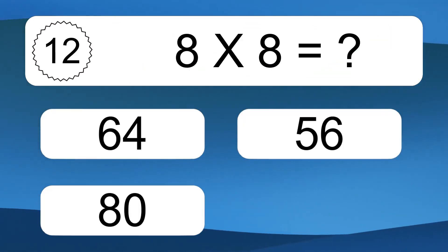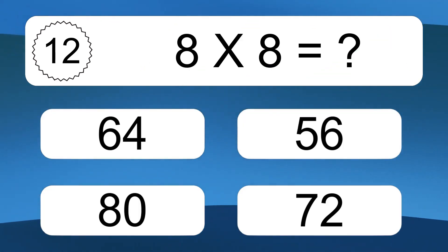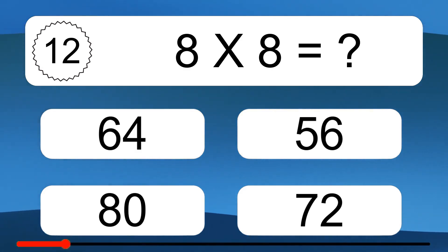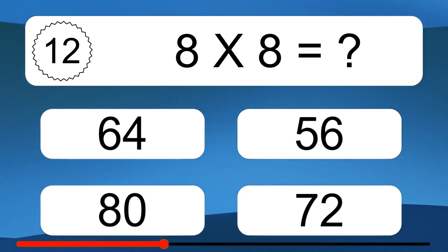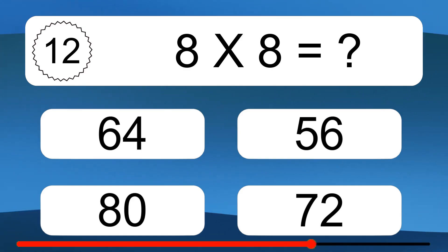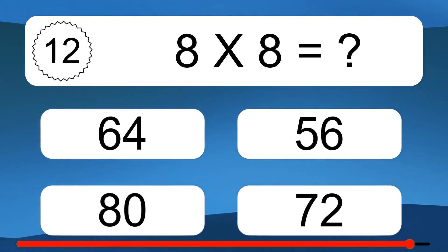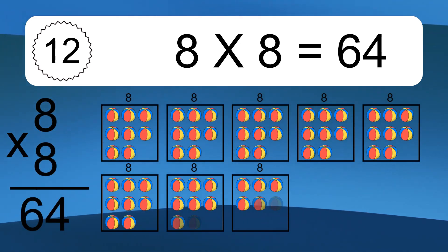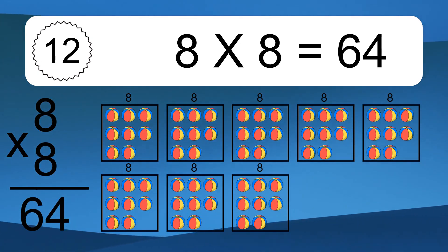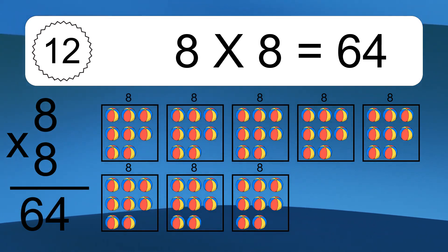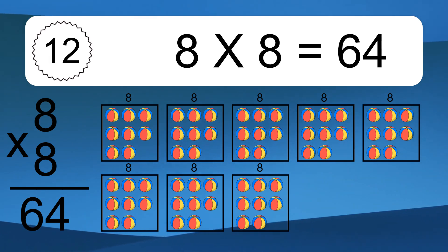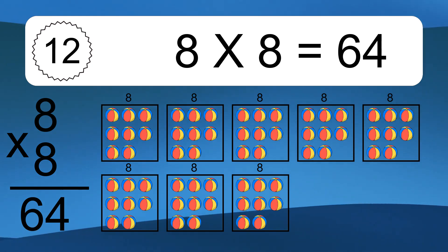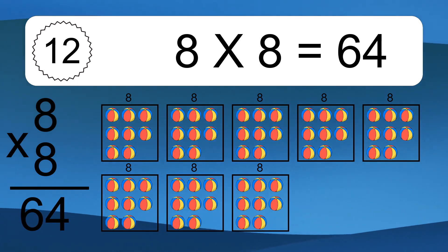8 times 8 equals what? We have 8 boxes, and each box has 8 colorful balls inside. If you count all the balls in all the boxes together, you will have 8 times 8 balls. This equals 64 balls.